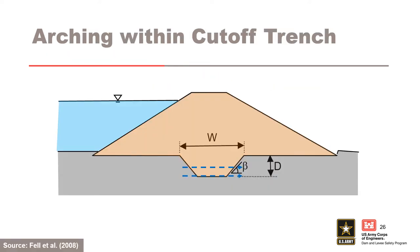For cutoff trenches, concentrated leak erosion of the core can occur at the core-foundation contact by water flowing in joints in the rock foundation. Concentrated leak erosion can also occur in a crack or hydraulic fracture across a cutoff trench. Hydraulic fracture in a cutoff trench needs to coincide with an open joint or coarse-grain soil layer downstream that provides an unfiltered exit, and hence the assessed probability should consider the likelihood of this coincidence. The hydraulic gradient used in the assessment of initiation should be based on the estimated hydraulic gradient across the cutoff trench.